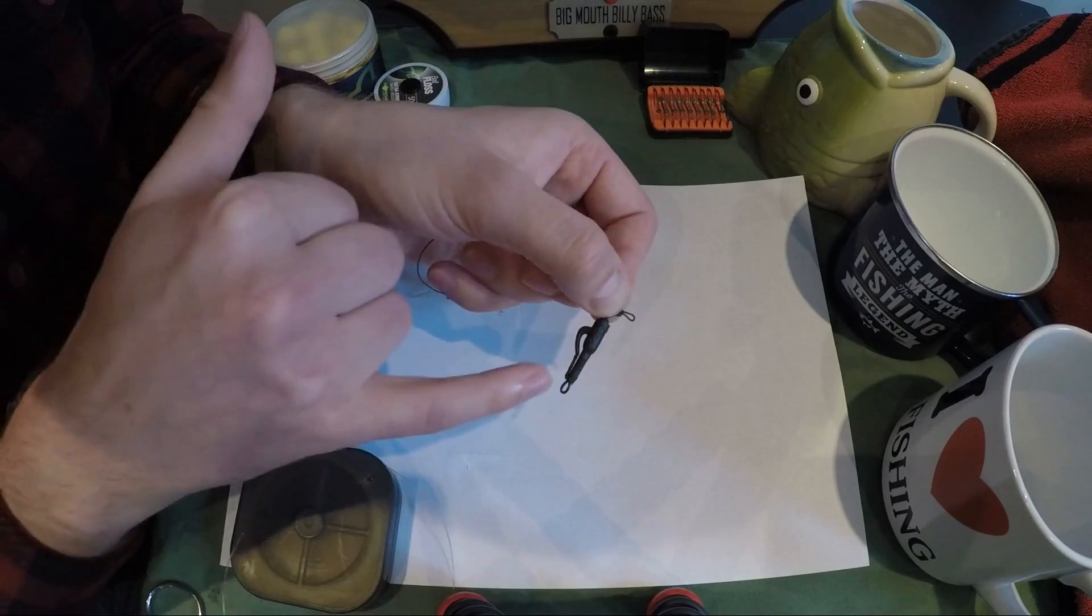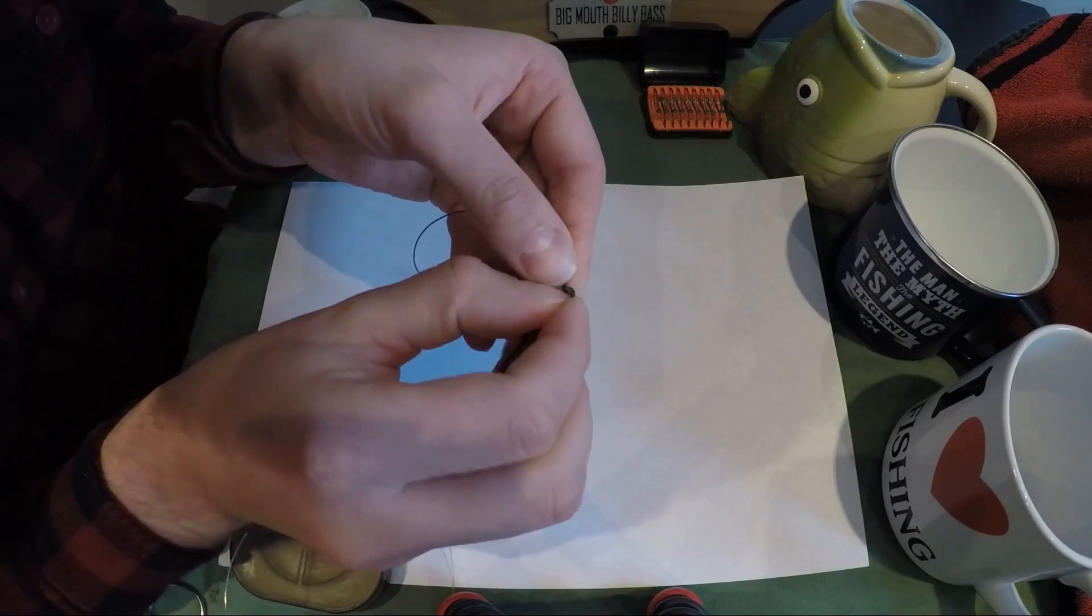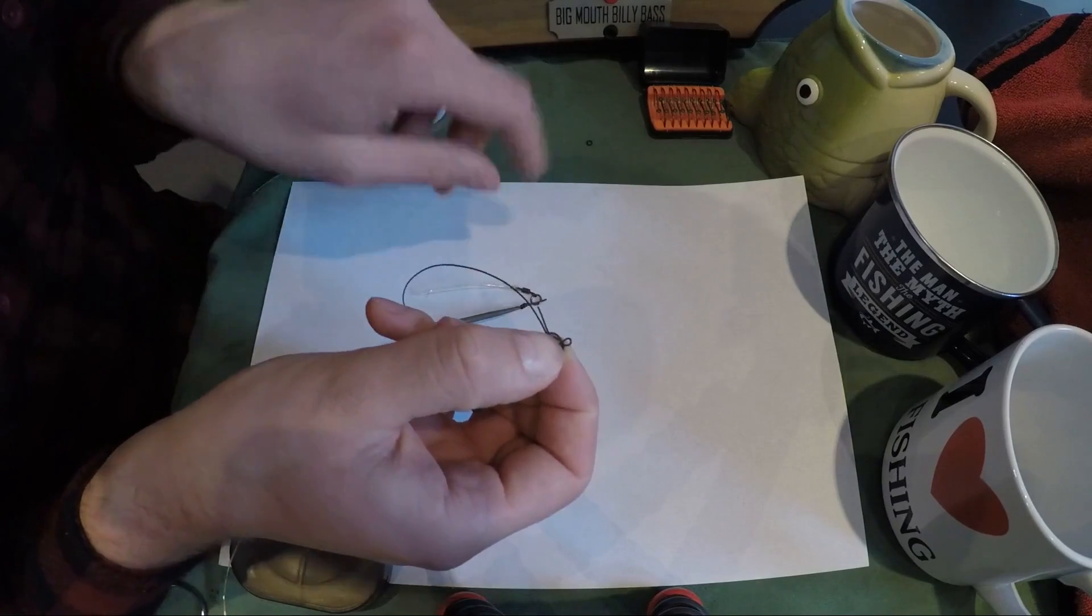Now normally what you do with the palomar knot is pass that lead clip back through that little loop, but I can't do that, I can't reach it. So an alternative is to instead pass the whole hook link through that little loop.